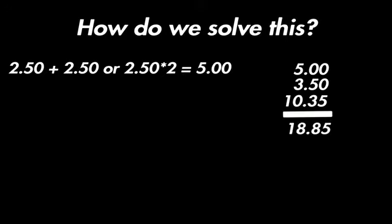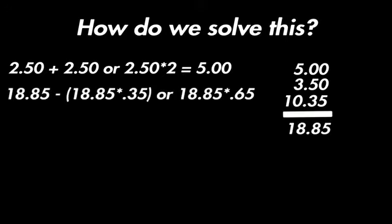So now we will try to find the discount which would be $18.85 minus $18.85 multiplied by 0.35. Or you can do $18.85 multiplied by 0.65 because you can just subtract the 35% from the 100% that we already had. This now leaves us with $12.25.